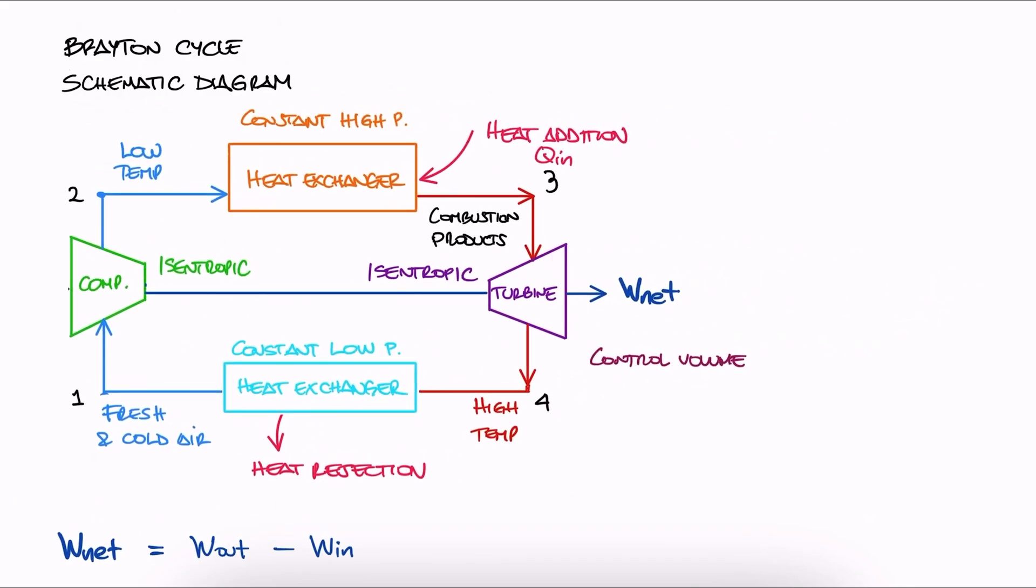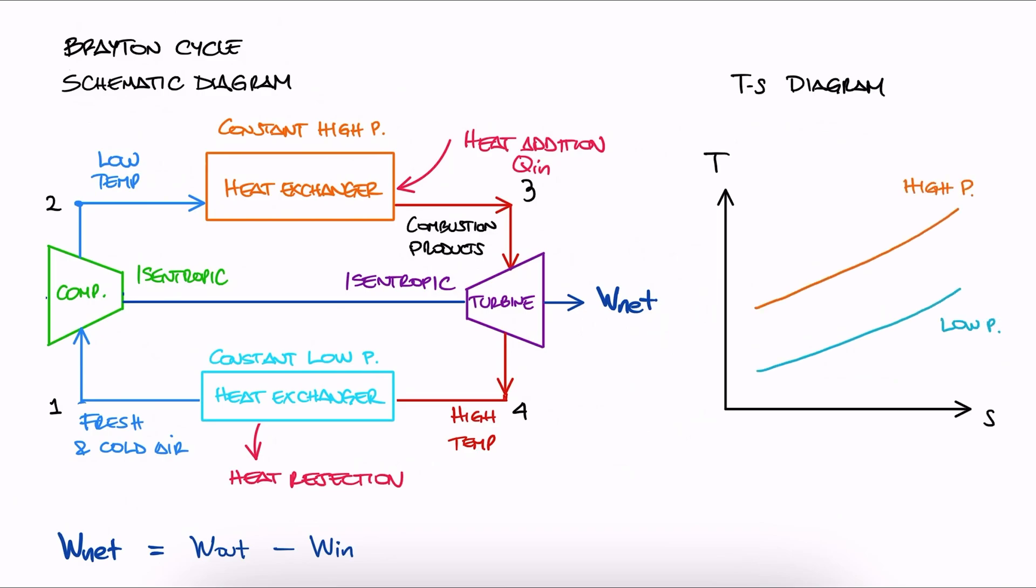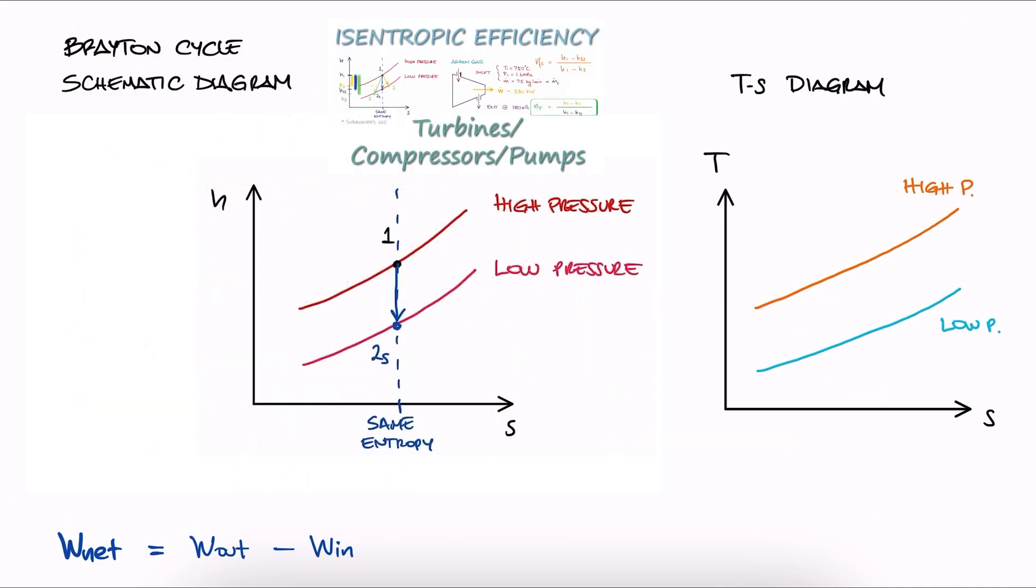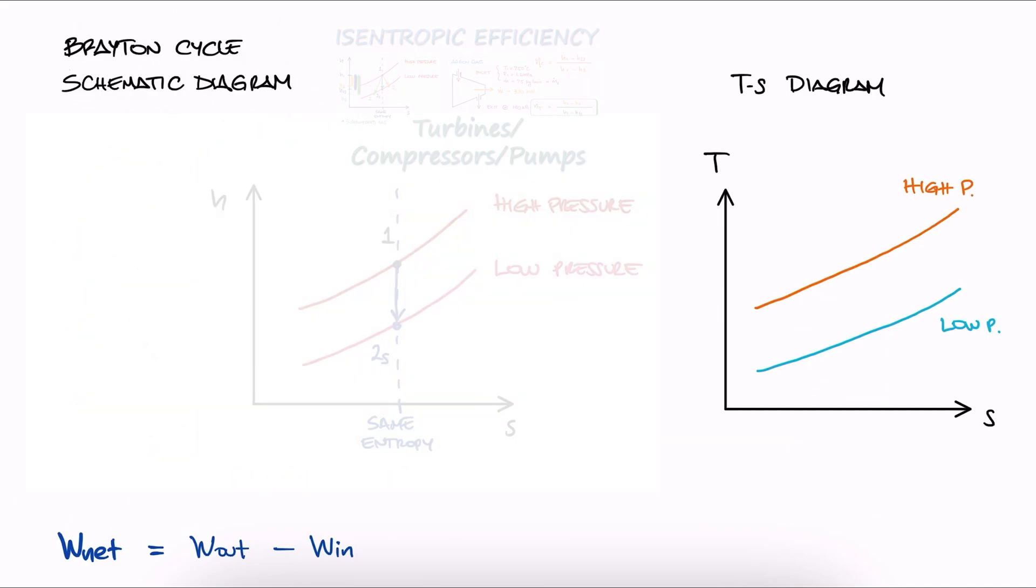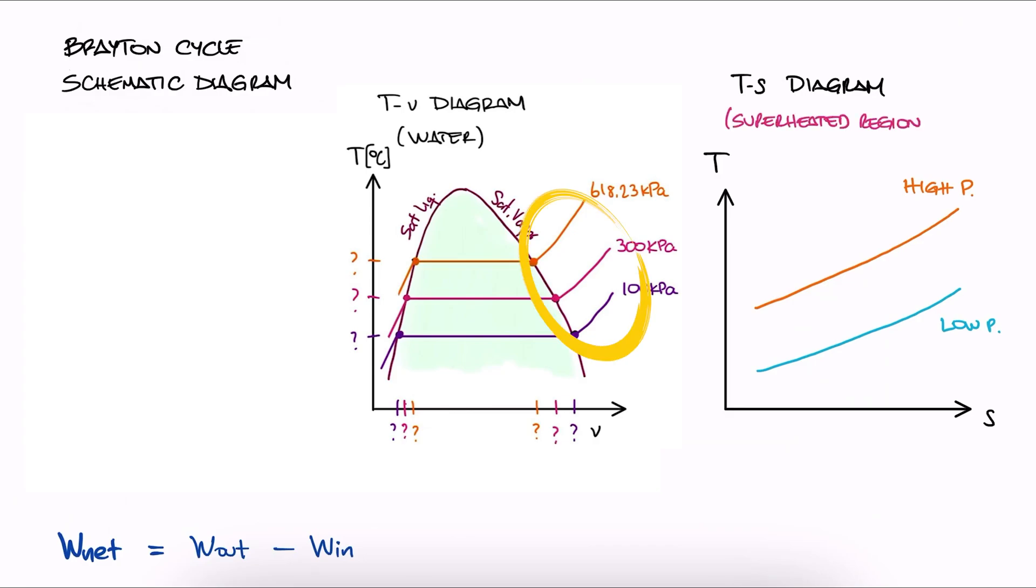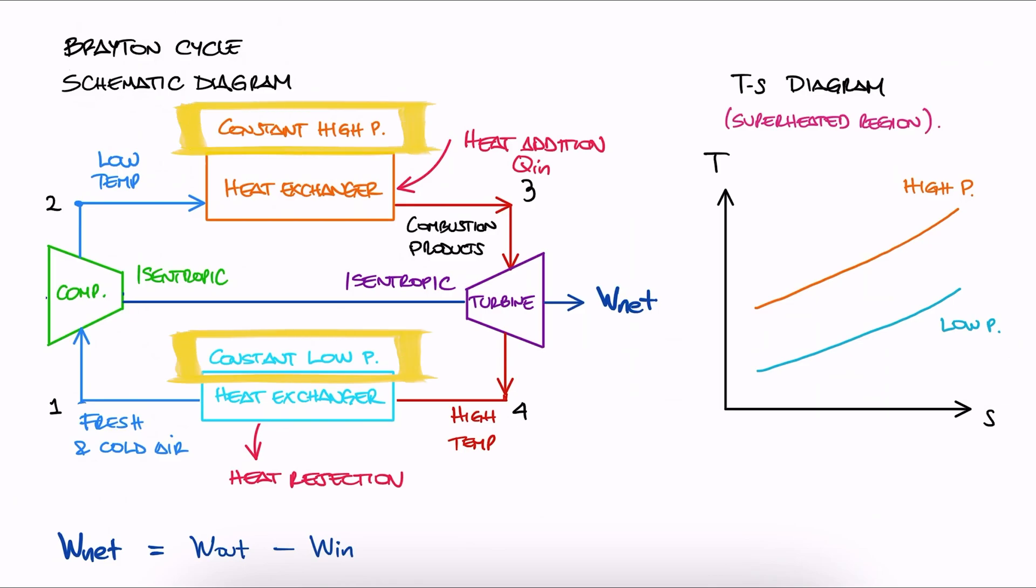We can plot this in a TS diagram. We have constant pressure lines just like the ones we drew from the HS diagram in the previous lecture, or the typical constant pressure lines of a TV diagram in the superheated region.